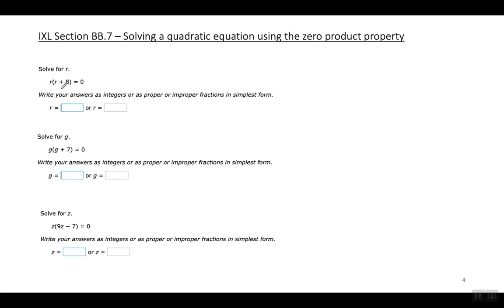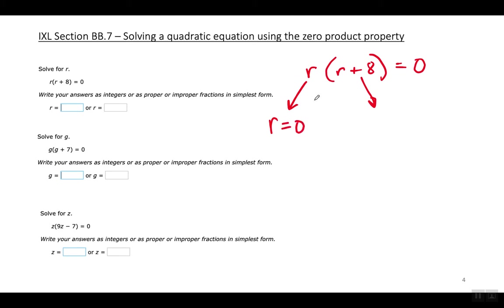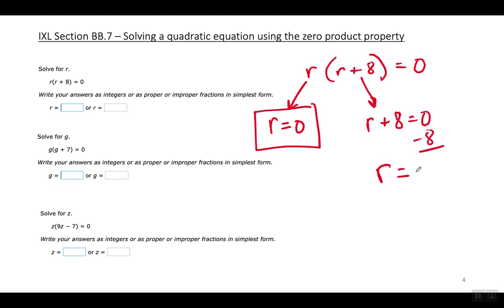Here is a quadratic equation that's already been factored. All you have to do is set each factor equal to zero. R is one factor, so R equals zero; R plus eight is the other factor, so R plus eight equals zero. R is already by itself so that one's finished. Move the eight to the right by subtracting, so R equals negative eight. My two answers are R equals zero and R equals negative eight.